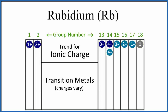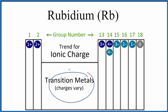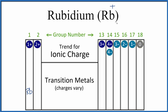Elements in group 1 form ions that are 1+, group 2 is 2+, skip the transition metals, and so on. Rubidium is right here in group 1, so rubidium is going to form ions that are 1+. We could write that as Rb+, that's the rubidium ion.